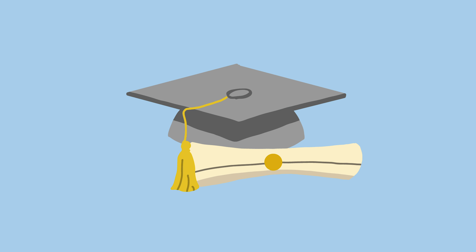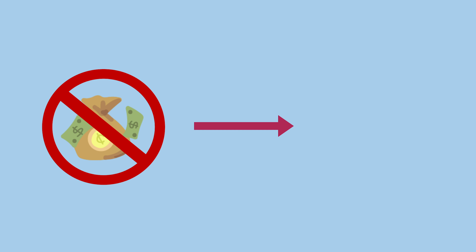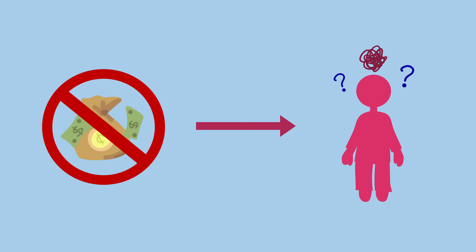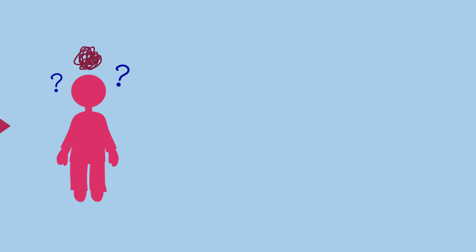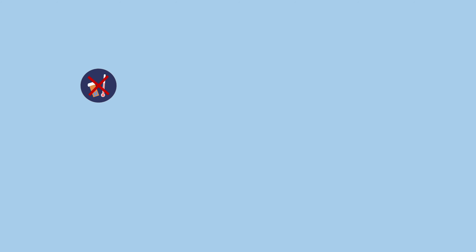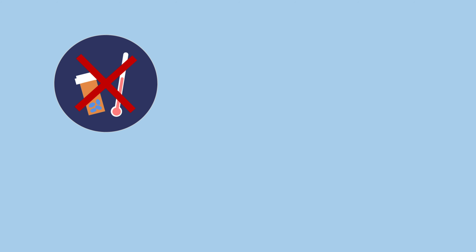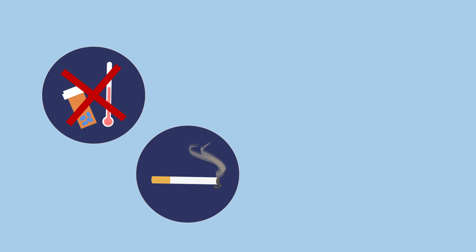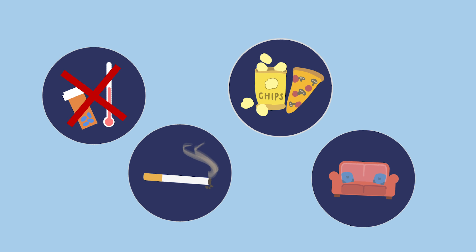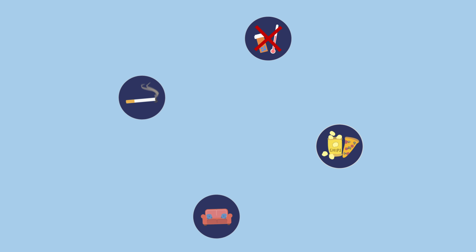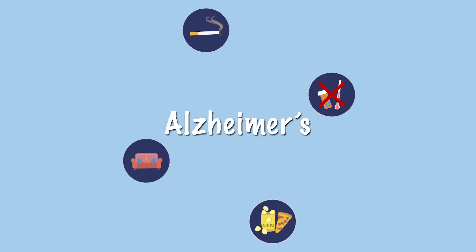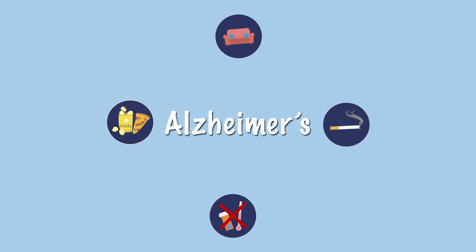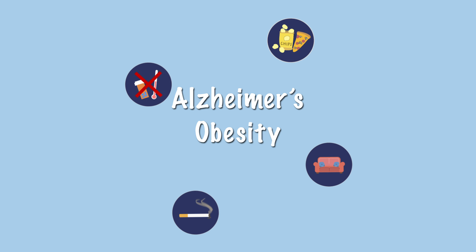Besides education, research shows a link between low socioeconomic status early in life and developing Alzheimer's disease later in life. Low-income populations in general have less access to health care and are more likely to have unhealthy lifestyle behaviors like smoking, unhealthy eating, and not exercising — all of which can contribute to the development of Alzheimer's disease and other chronic diseases such as obesity and diabetes.